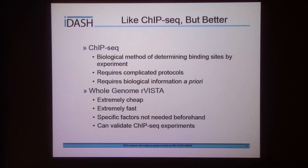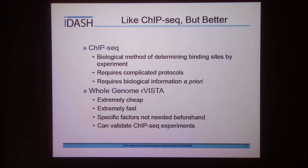You may be asking yourself, can't I already do all of this with CHIP-seq? CHIP-seq is a biological method of determining transcription factor binding sites by experiment, but it requires very complicated protocols, and most importantly, you need some a priori biological information — you need to know which transcription factor you're looking at beforehand. With Whole Genome R-Vista, you have a method that's very inexpensive, very fast, and you don't need to know which transcription factor you're looking for beforehand. Any transcription factor in the database can show up in your results, so you can actually be surprised. And since Whole Genome R-Vista is independent of CHIP-seq, you can actually use it to validate CHIP-seq results.